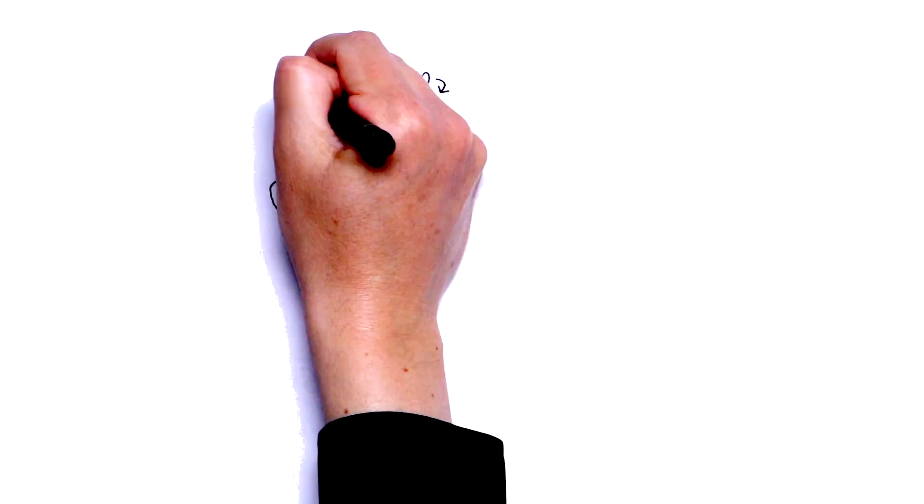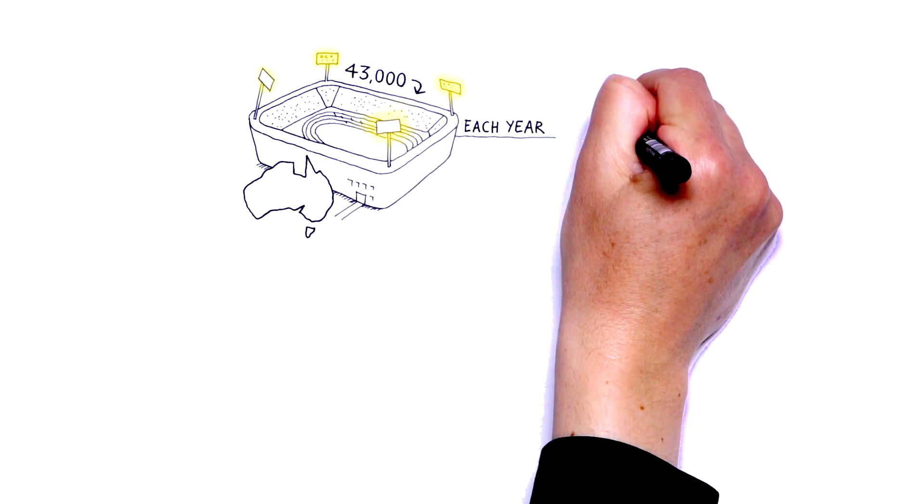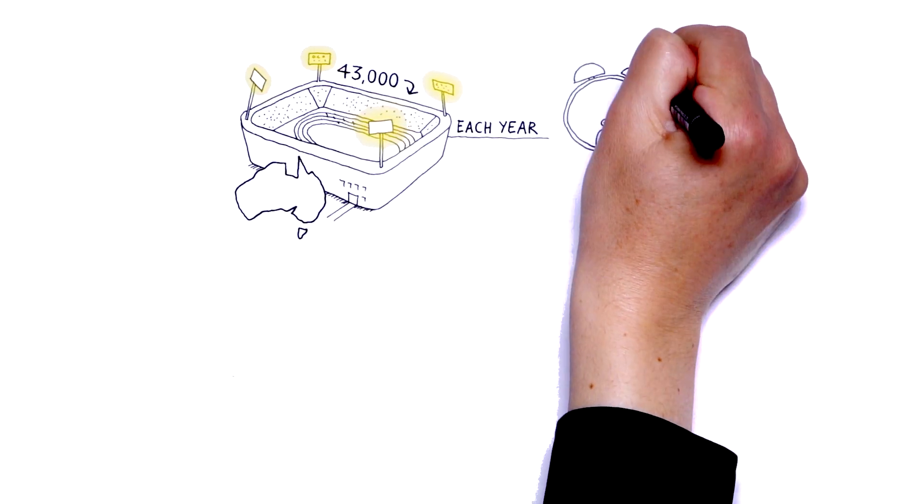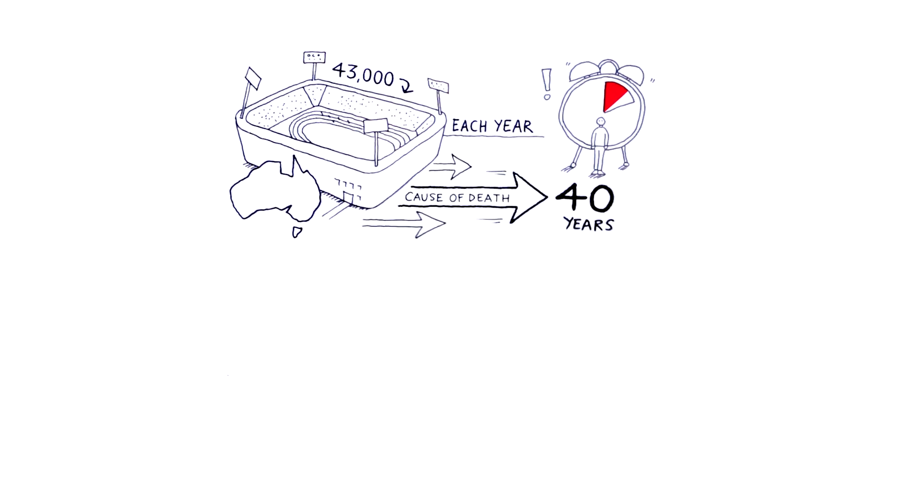In Australia, over 43,000 people die from cardiovascular disease each year. One person every 12 minutes. It has been our leading cause of death for more than 40 years.